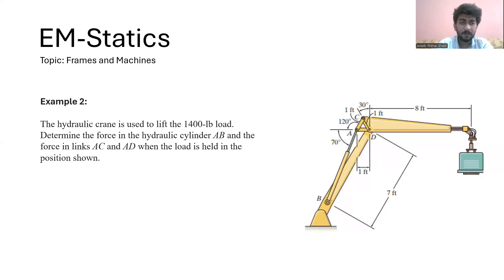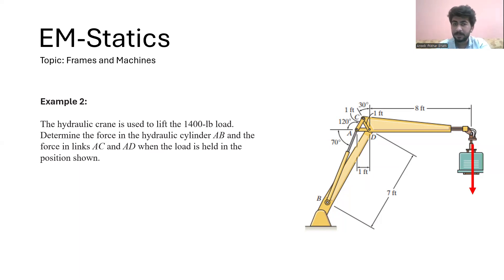In this problem we are given a hydraulic crane that is lifting a load equal to 1400 lb. We have to find the force in the hydraulic cylinder AP and the force in links AC and AD. According to the problem statement, a load of 1400 lb is acting vertically downward because the hydraulic crane is lifting, and the mass acts vertically downward due to the force of gravity.